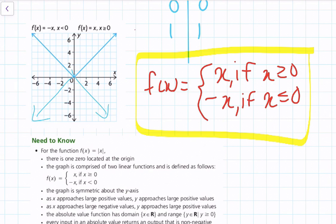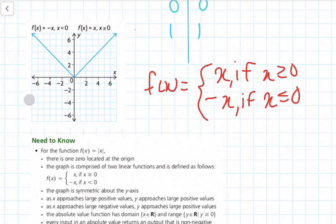f of x equals x if x is greater than or equal to 0 — this line looks a lot like y equals x. And then this other line looks a lot like y equals negative x. Depending on whether x is positive or negative, it follows the rules of either linear function. Because we're dealing with absolute value, you'll never get a negative value in your output.